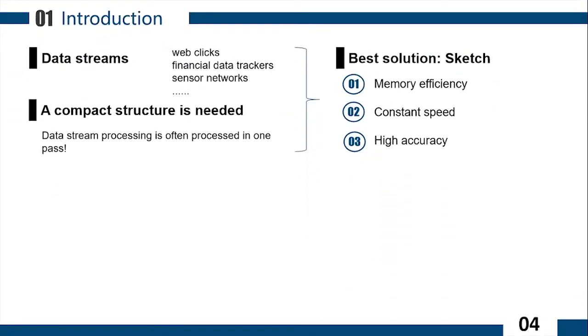In many applications, big data streams are automatically generated, such as web clicks, sensor networks, and so on. In fact, data stream processing is often processed in one pass, and we usually cannot store all the items in the streams. Hence, it is desired to have a compact structure for supporting the applications.